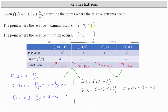For the relative minimum, f of 4 equals 5 plus 2 times 4 plus 32 divided by 4, which is 5 plus 8 plus 8, equaling positive 21. So the relative minimum occurs at the point 4, 21. A common mistake is to think the largest y-value is always the relative maximum and the smallest is the relative minimum — that is not the case here, where the relative maximum is negative 11 and the relative minimum is positive 21.